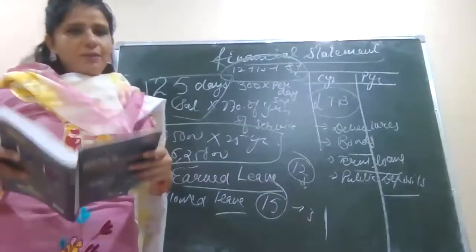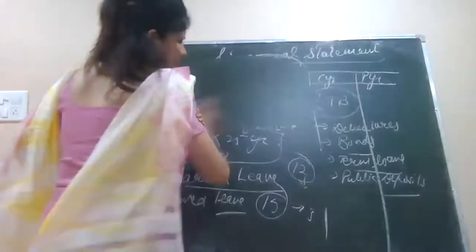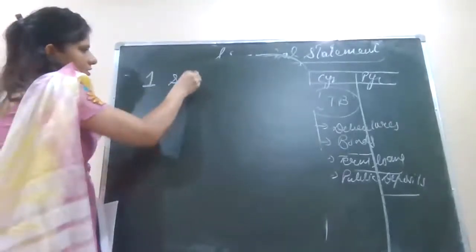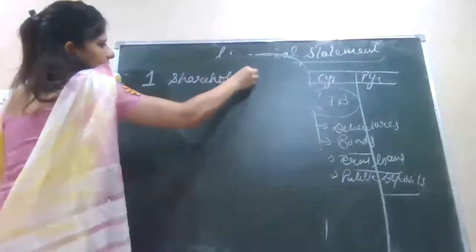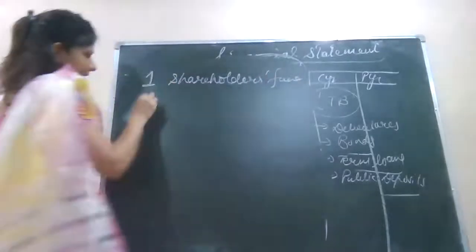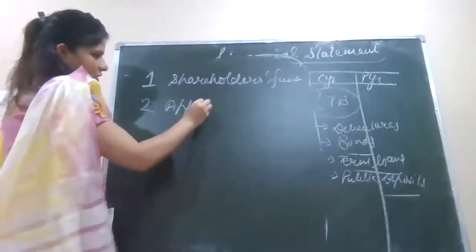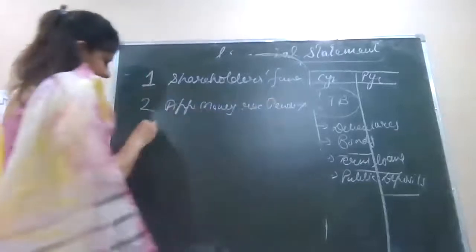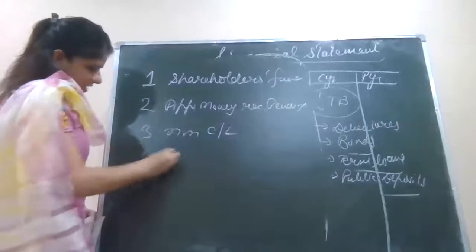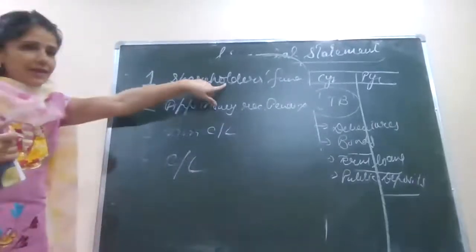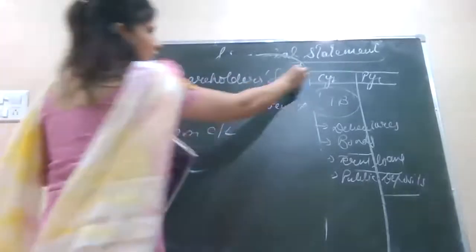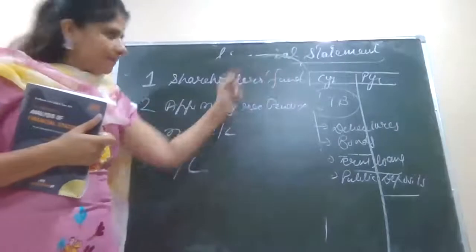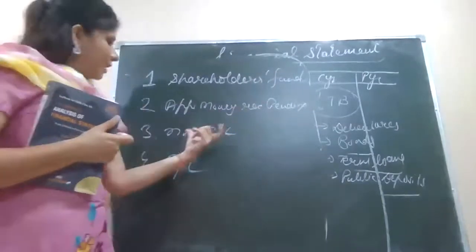At last we have arrived at the major part of equity and liability. Let me write the sequence again: first head was shareholder funds; then application money received pending allotment; then third head non-current liabilities; and the fourth head we have arrived at — current liabilities. Under shareholder funds: share capital, reserve and surplus, money received against share warrants. Money received against share warrants is not a subhead — it has a complete head in non-current liability.